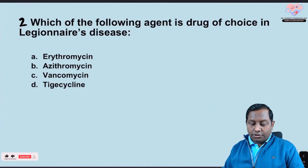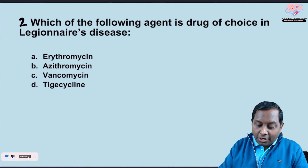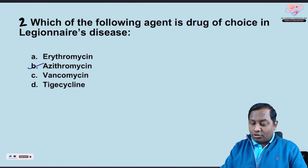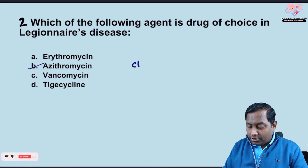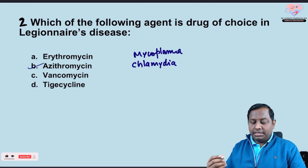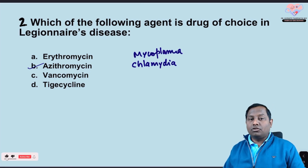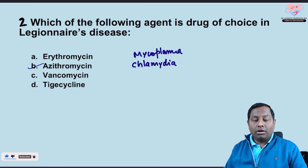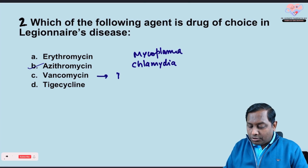Which of the following is the drug of choice in Legionella — atypical pneumonia? Azithromycin is the drug of choice — also for Chlamydia, Mycoplasma, and Legionella disease. For all of these, azithromycin is the drug of choice, not erythromycin. Remember, both azithromycin and erythromycin are from the macrolide group only.